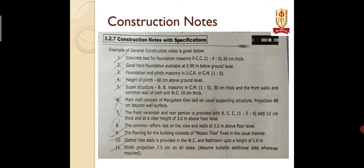Then there is the foundation and plinth masonry in UCR with cement mortar 1:5. The plinth height is 60 cm above ground level. Then the superstructure is of brick masonry. For the roof, Bangalore tiles (red color tiles) are used, and the projection of the roof is 45 cm. For flooring, mosaic tiles are used. In WC and bath, dados are used up to a height of 1 meter. The plinth projection is 7.5 cm throughout all sides of the building — this must all be mentioned in the construction notes.